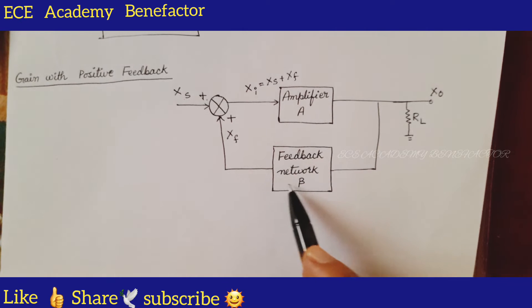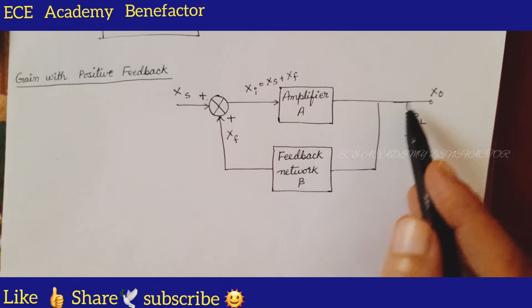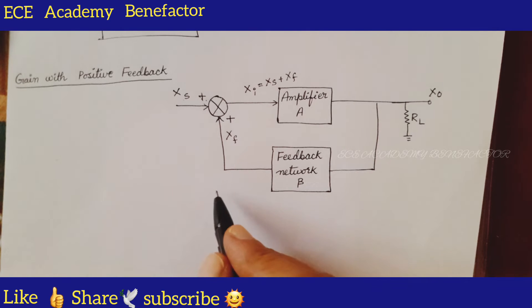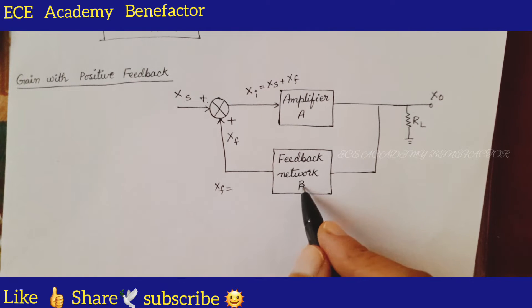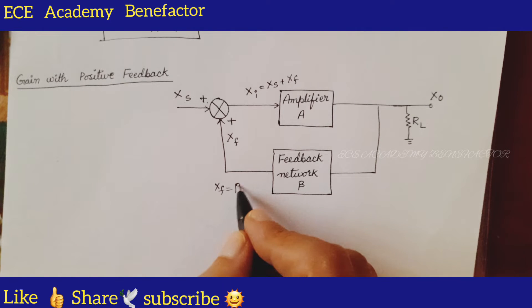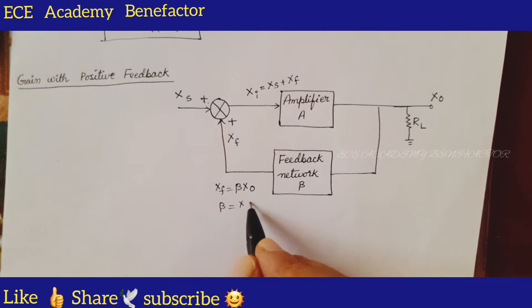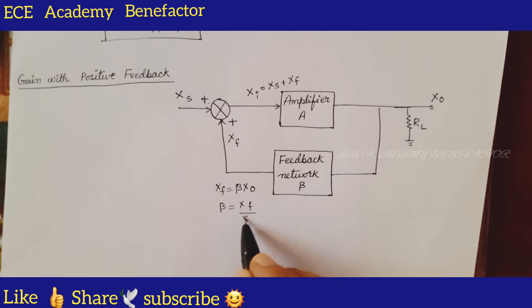What is this feedback network doing? It is taking a part of the output and giving it back to the input. What is Xf equal to? Beta times Xo. What is beta equal to? Xf by Xo.